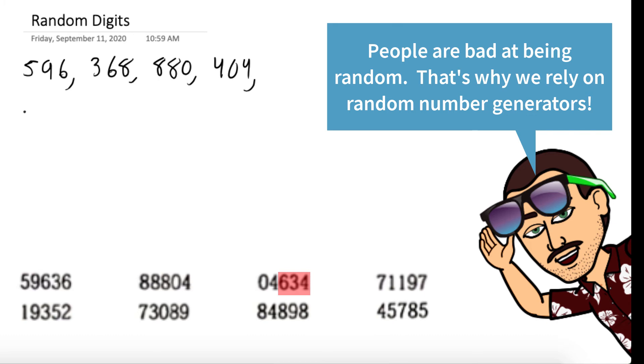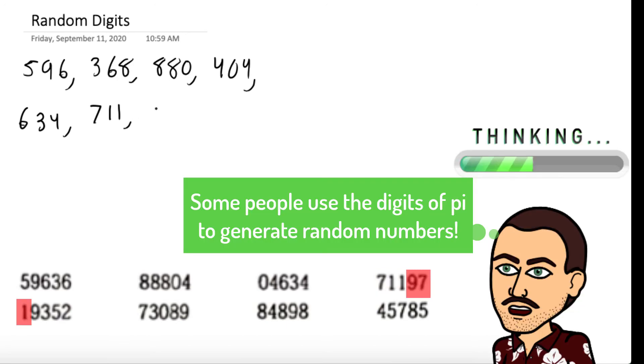404, 634. Again, just go three at a time. And the way this table was generated is we're going to get random numbers.